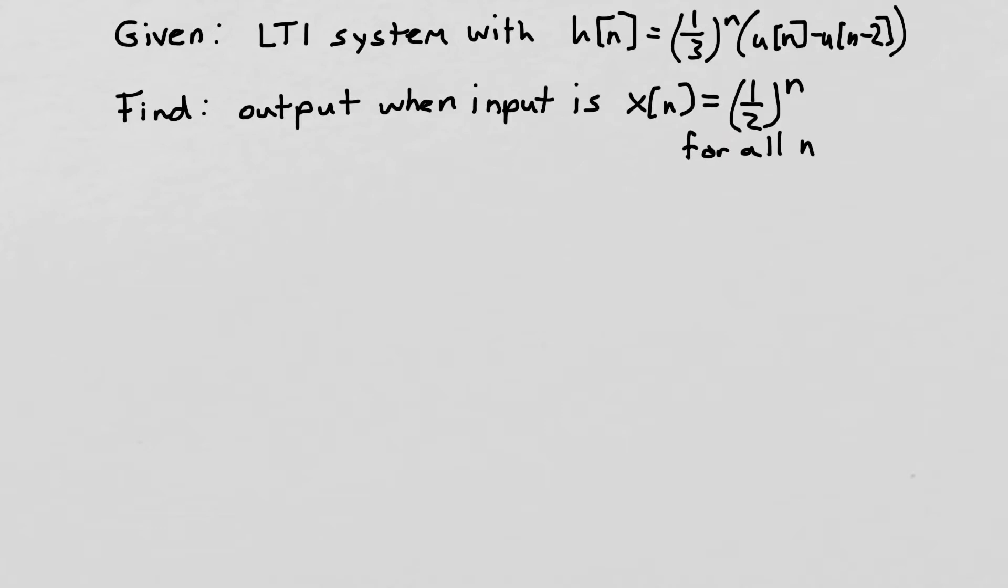So let's first look at h of n, the definition of h of n given up here. So it's a third to the n times u of n minus u of n minus 2. Well u of n is the unit step sequence, so u of n minus u of n minus 2 is simply 1 for 0 and 1 and 0 everywhere else. So we can draw h of n is going to look like this. It's going to look like a third to the 0, which is 1, times a third to the 1 at 1 and then 0 everywhere else.